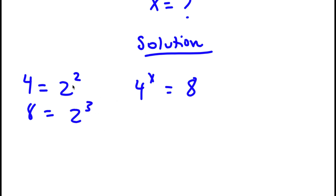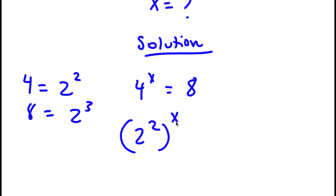Now if I replace 4 with 2 to the power of 2, and if I replace 8 with 2 to the power of 3, I get 2 to the power of 2 to the power of x is equal to 2 to the power of 3.